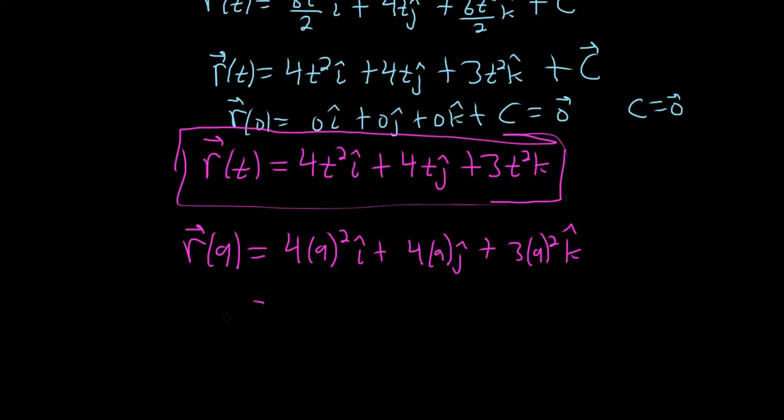But let's not be heroes here. So 4 times 81, I got 324. Big numbers. I hat plus 4 times 9, which is 36 j hat. And the last one is 3 times 81 because 9 squared is 81.